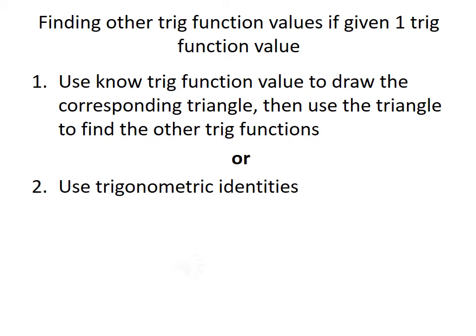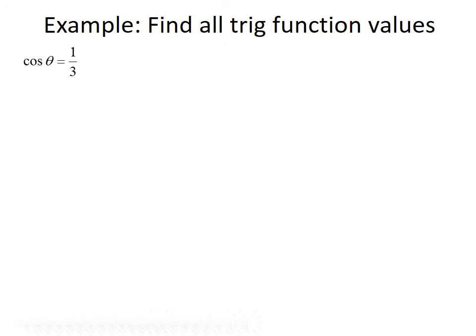Now that we've talked about our trig functions, we should be able to find all trig function values given just one of them, and there are two approaches. The first is to use the known value to draw a corresponding triangle, then use that triangle to find the other functions. The second is to use trigonometric identities. Let's find all trig function values given that cosine of theta equals 1/3, using the triangle method. Since cosine is adjacent over hypotenuse, and our value is 1/3, the adjacent side is 1 and the hypotenuse is 3. We can sketch a triangle with adjacent leg 1 and hypotenuse 3, then use the Pythagorean theorem to find the third side.